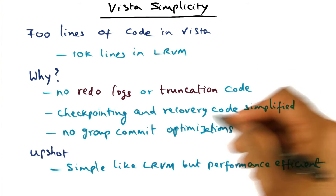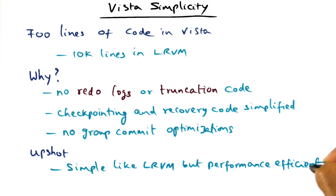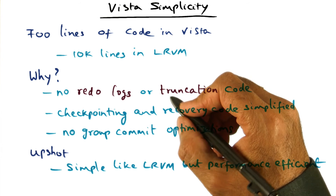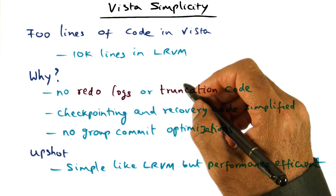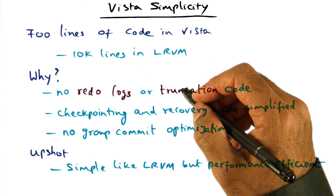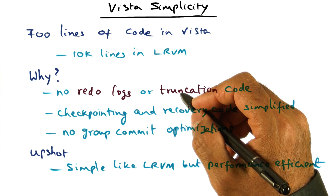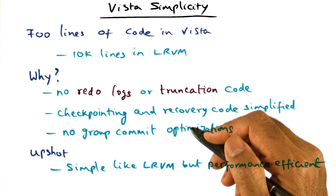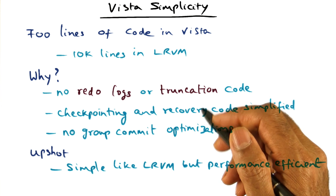You can get rid of redo logs and get rid of truncation code, and Vista has the simplicity of LRVM, but it is also performance efficient. I encourage you to browse through the performance results reported in the paper on Rio Vista, which I have assigned for your reading, to see how Vista performs compared to LRVM. In particular, Vista performs three orders of magnitude better than the original LRVM, because of the simplicity and the fact that there is no disk IO. That is the biggest improvement in making Vista perform really well compared to LRVM.